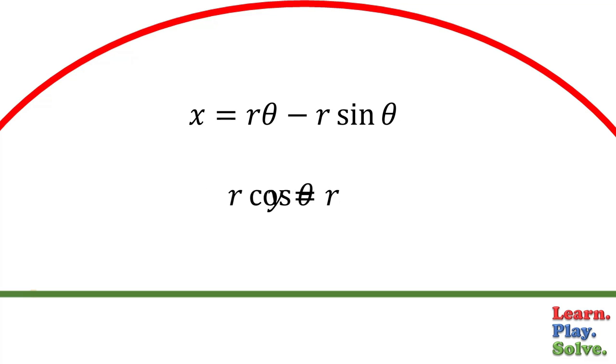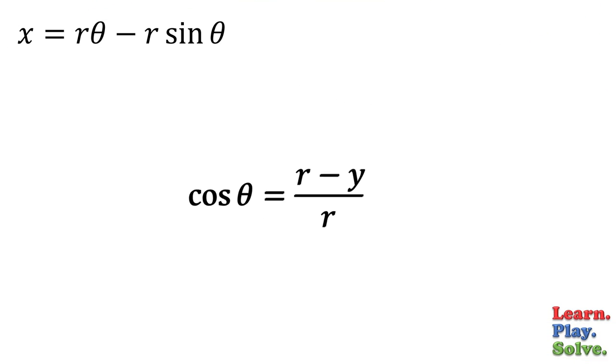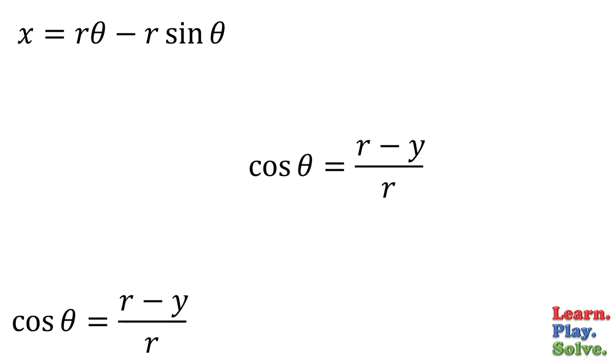Just add r cosine to the other side and subtract y, then divide by r. We'll come back to this, but first, let's finish solving for theta by using the inverse cosine function. That'll give us the first part.